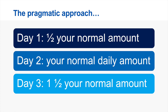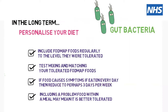There are no hard and fast rules to this process — every single person is different. In the long term, it's really important to personalise your diet. A lot of people will end up on what we'd call an adapted FODMAP diet, where they've got most FODMAPs back in, but there are several FODMAPs they have to be careful of and they avoid having too many in one meal. It is really important to get FODMAPs back in your diet to keep your gut bacteria healthy, so include FODMAP foods regularly to the level that they're tolerated.